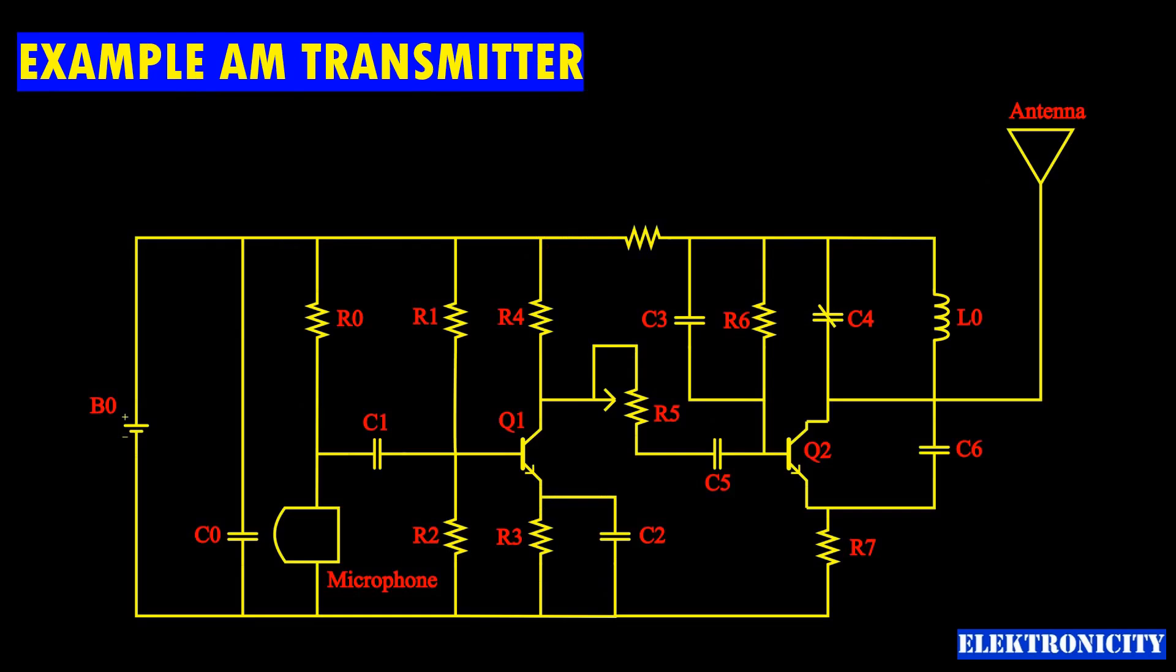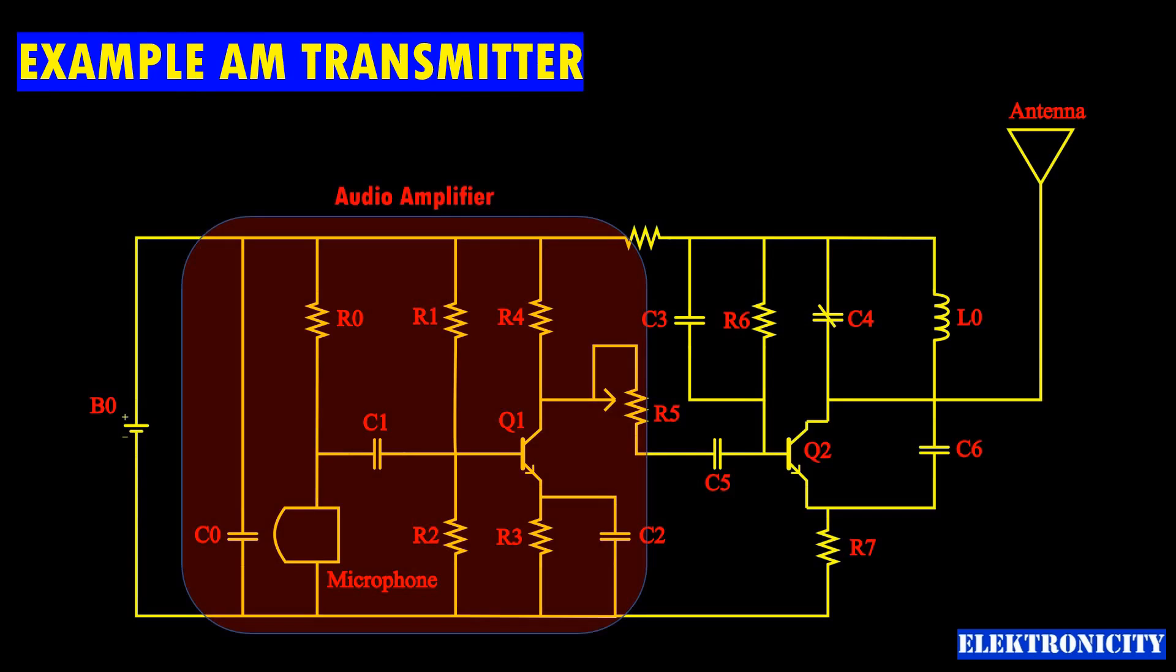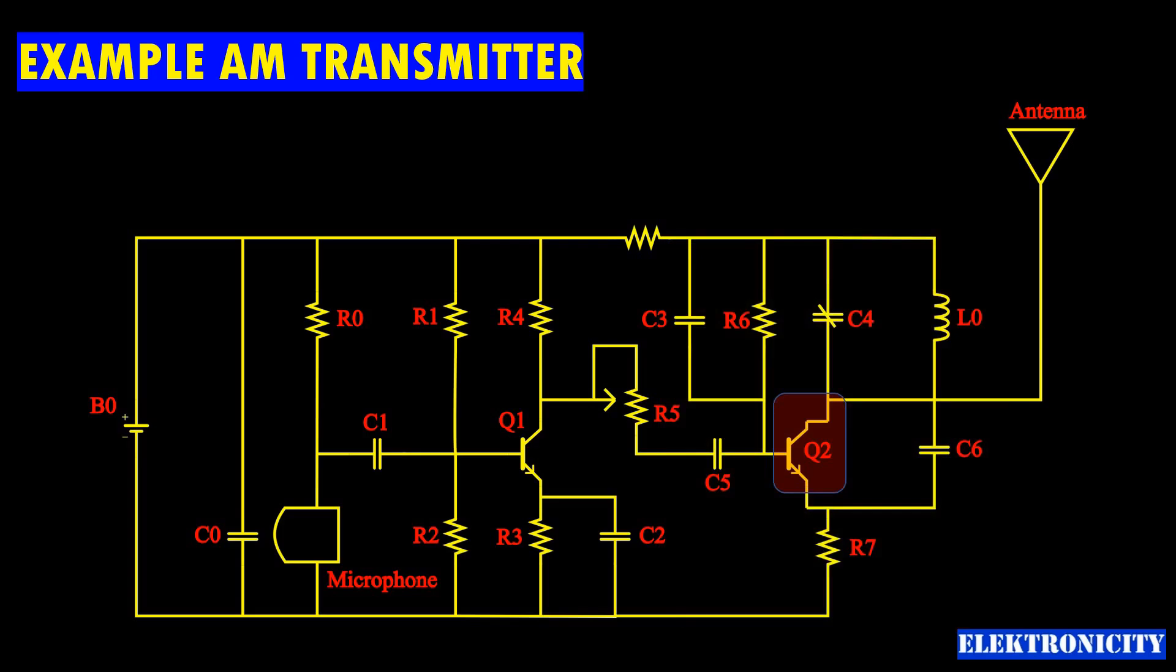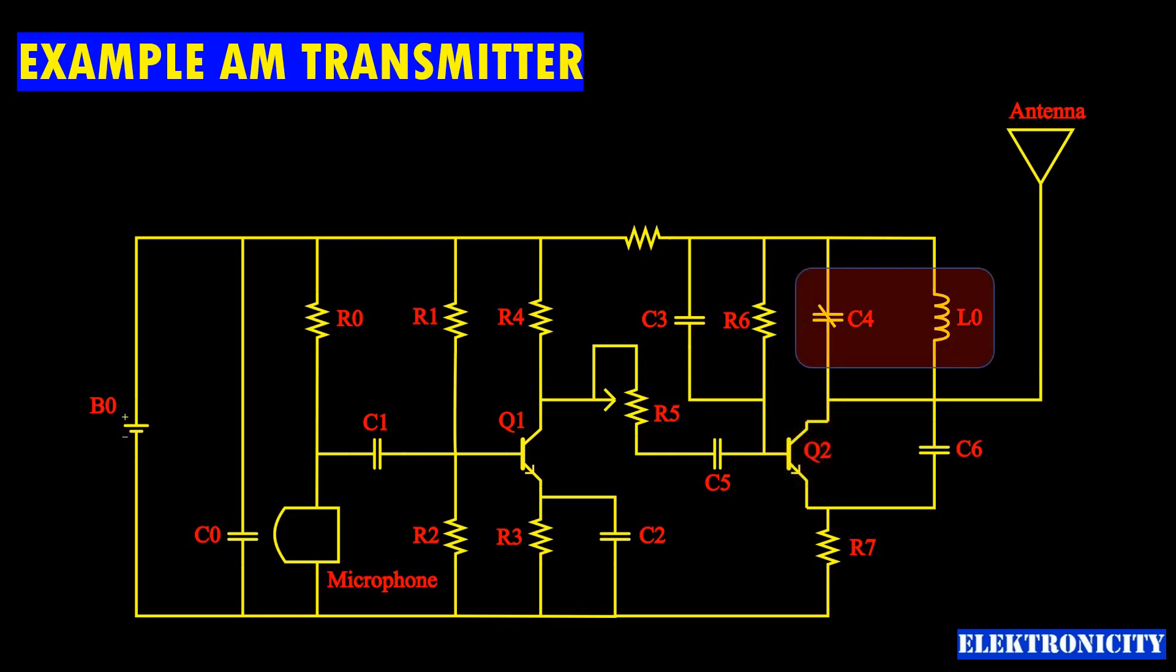The circuit has two parts: an audio amplifier and a radio frequency oscillator. The oscillator is built around transistor Q2 and related components. The tank circuit with an inductance L0 and capacitance C4 is tunable to control AM transmission frequency from 540 to 1600 kilohertz.